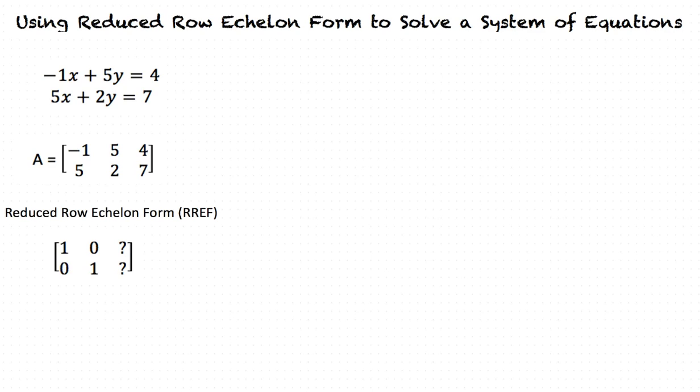Now, we can try getting into this form through row operations. Let's start by turning the number under our pivot into zero. What is our first row operation? Our first row operation would be row 1 multiplied by a scalar of 5 and added to row 2 to create a new row 2.